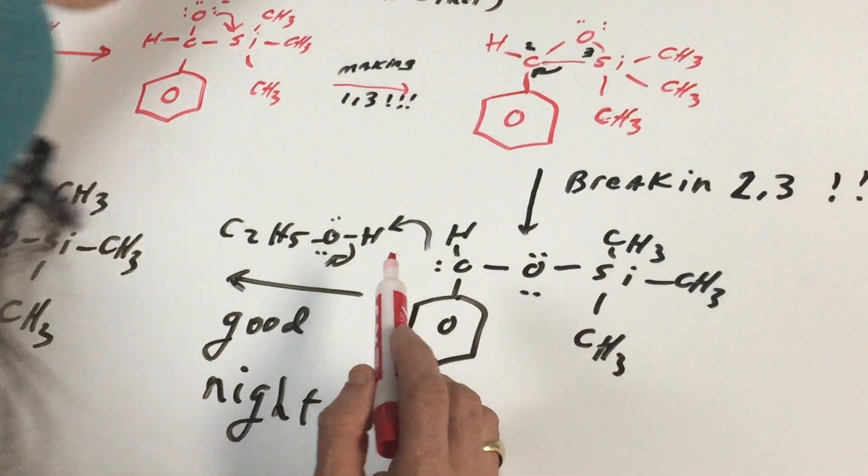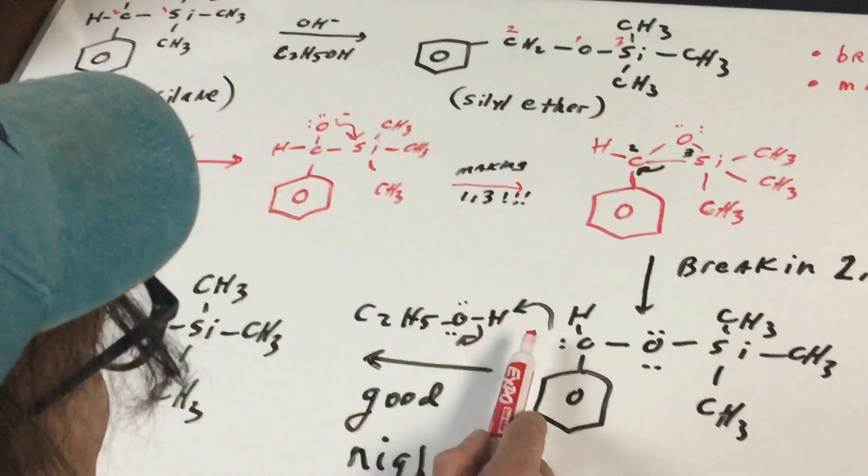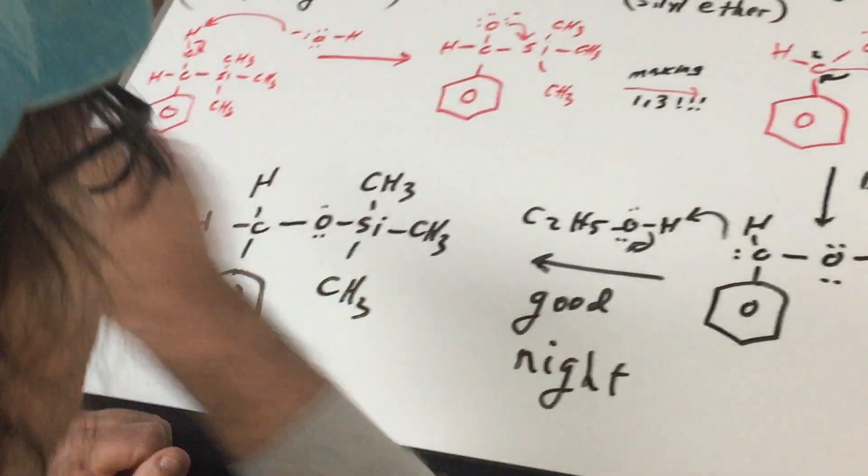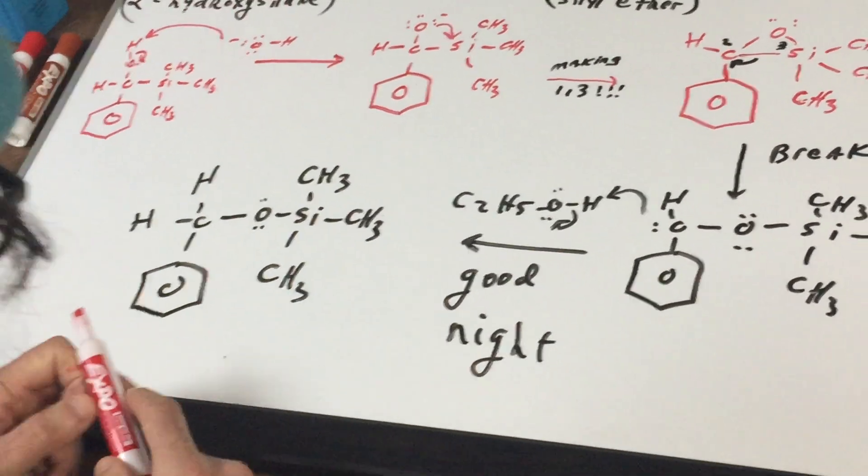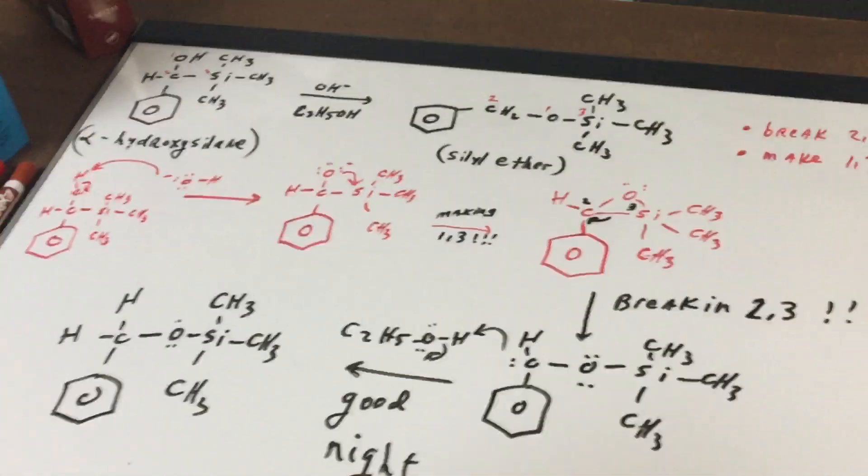The last step, we're going to use a proton source. Here I'm going to take ethanol, I'm going to protonate the molecule, and boom! If you look at what I've done and you look at the connections, that is the needed silyl ether.